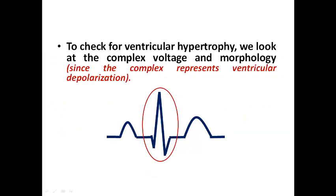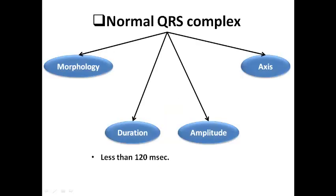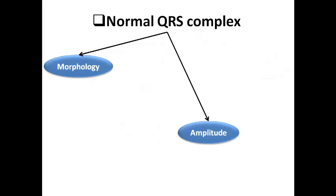To check for ventricular hypertrophy, we are going to focus today on the QRS complex itself because the complex represents ventricular depolarization. The first thing we need to start with is the normal parameters of the complex: morphology, duration, amplitude, and axis. The normal duration of a QRS complex should be less than 120 ms. Today we are going to focus on morphology and amplitude in order to diagnose LVH and RVH.